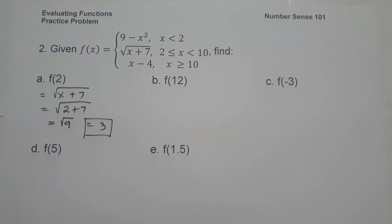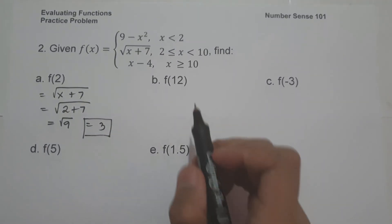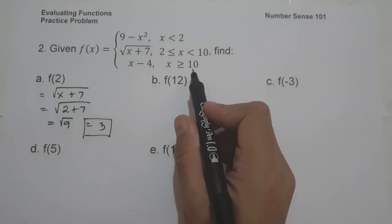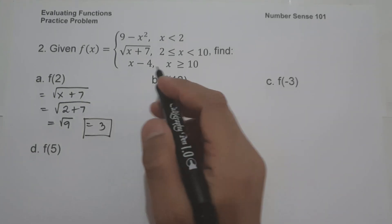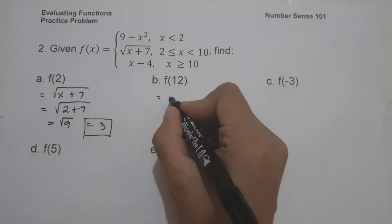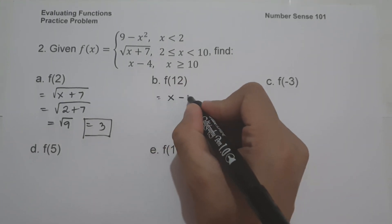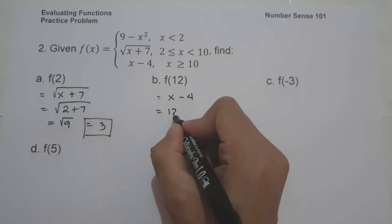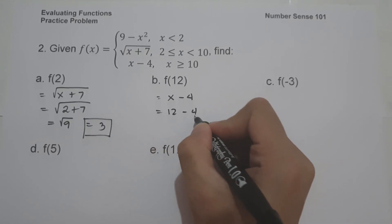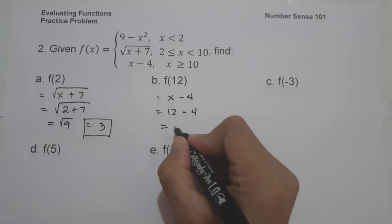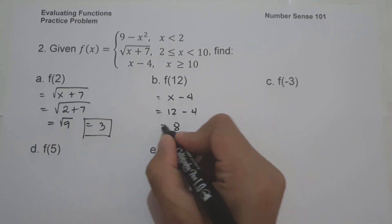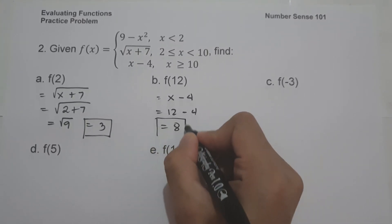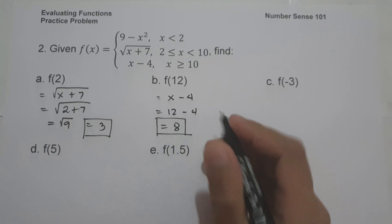On letter b, f of 12. Since 12 is greater than 10, we use x minus 4. This will be 12 minus 4, and that is 8. This will be our answer.